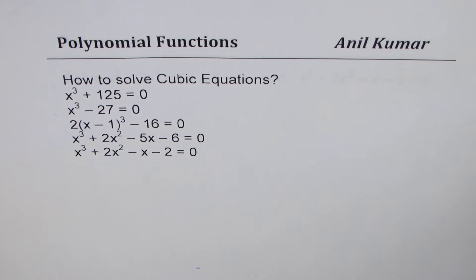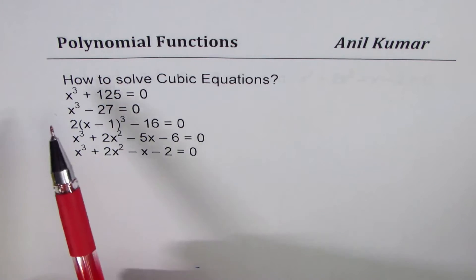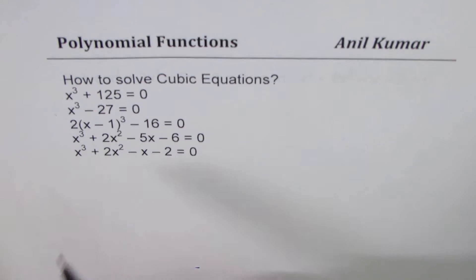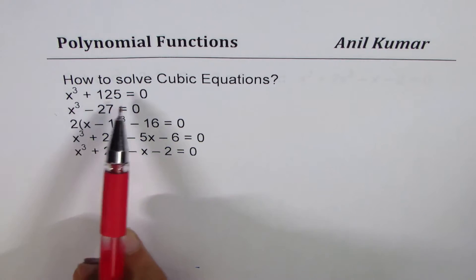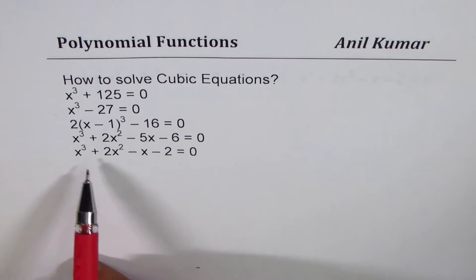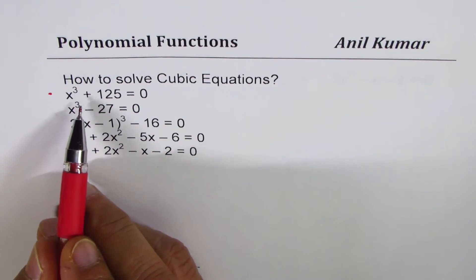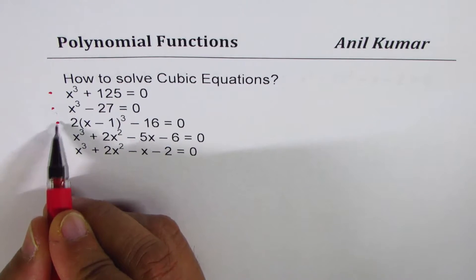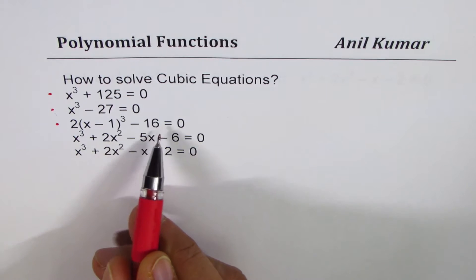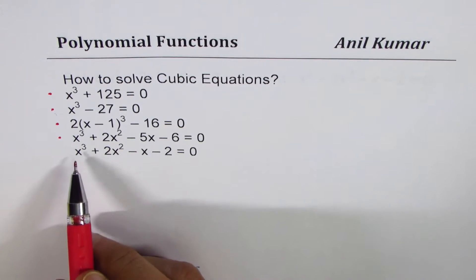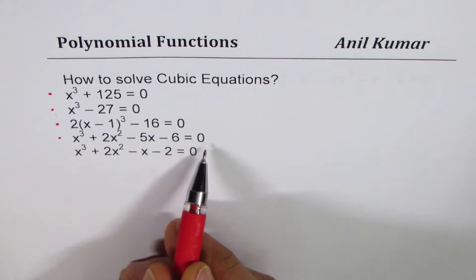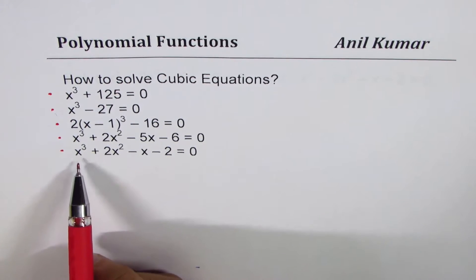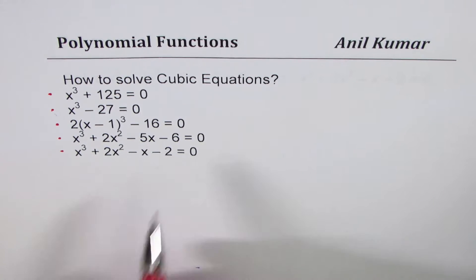I'm Manil Kumar and in this video we'll go through steps required to solve cubic polynomials. We have five different equations here. The first is x³ + 125 = 0, the second is x³ - 27 = 0, the third is 2(x-1)³ - 16 = 0, then x³ + 2x² - 5x - 6 = 0, and lastly x³ + 2x² - x - 2 = 0.